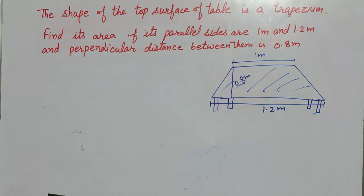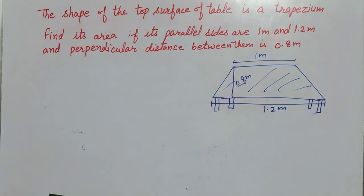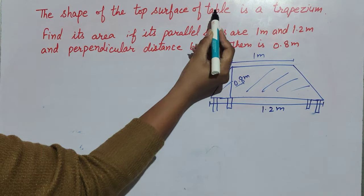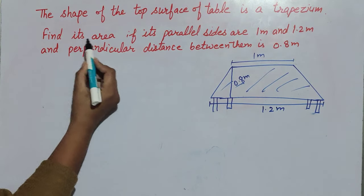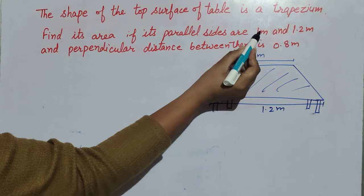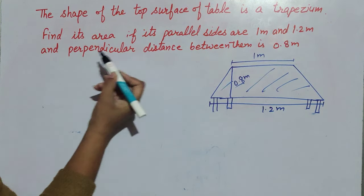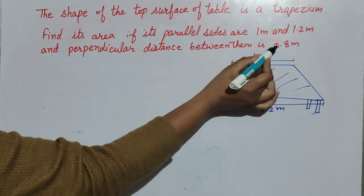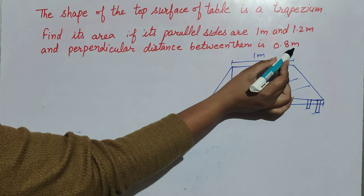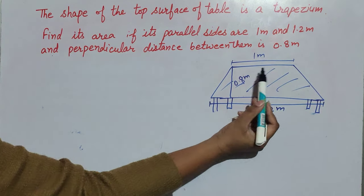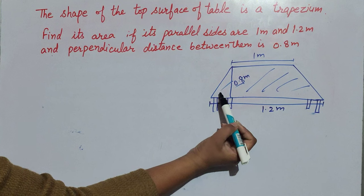Hello friends, welcome to my channel. In this video we discuss the shape of the top surface of a table, which is a trapezium. Find its area if its parallel sides are 1 meter and 1.2 meter and the perpendicular distance between them is 0.8 meter. This is the top surface of the table, like a trapezium.